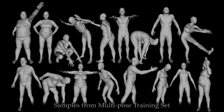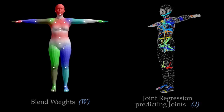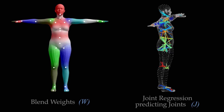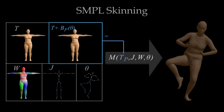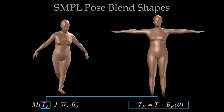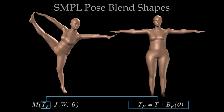To learn the SMPL pose model, we use a database of over 1,700 3D scans of 44 different subjects in a wide range of poses. From these, we learn the blend weights W, and a function that predicts the location of each joint J using a sparse set of mesh vertices. We also learn the pose blend shapes B_P that are added to the template to model how people deform with pose. Here we see a SMPL model animated on the left, and the associated pose blend shapes applied to the static mesh on the right.